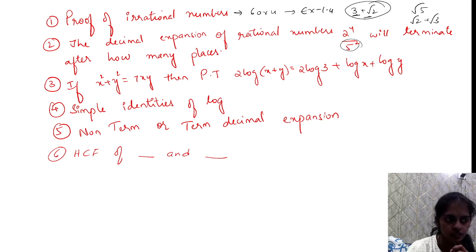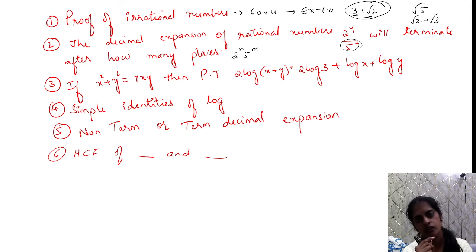If you have a denominator in 2 power n, 5 power n form, if there is 2 and 5, it is terminating decimal. If 2 and 5 is not present in the denominator, it is non-terminating decimal. So if you use this, the question will be short. 2 mark question or part B question.